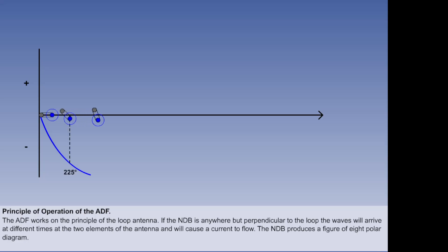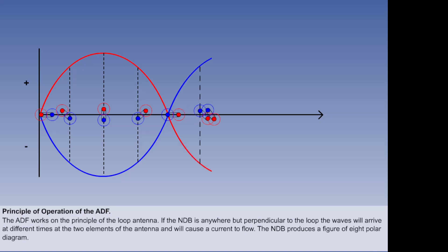At the same time, the other blue element of the antenna is following the opposite pattern. It is 180 degrees out of phase. If we place the two patterns together, we get a figure of eight polar diagram of the beacon signal strength at all points of the loop antenna.